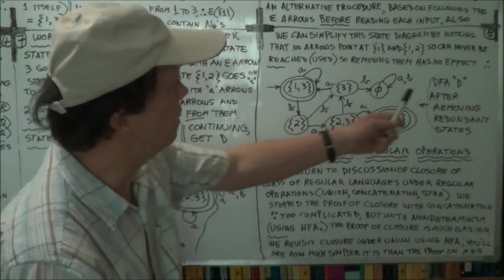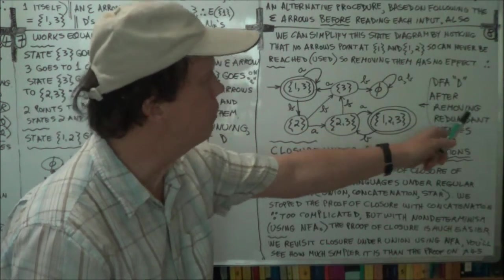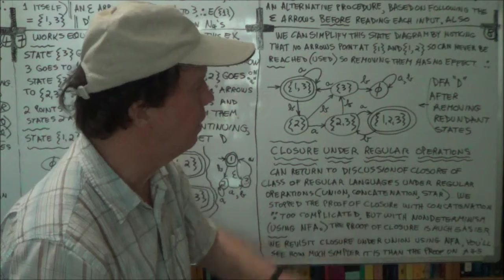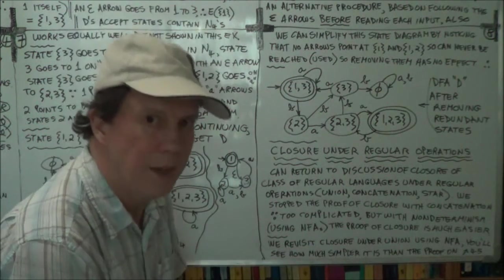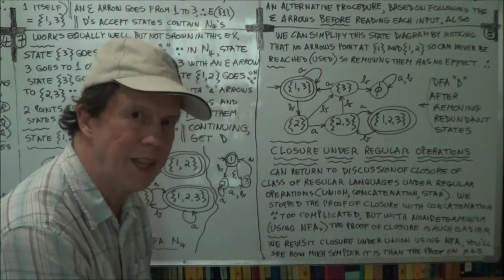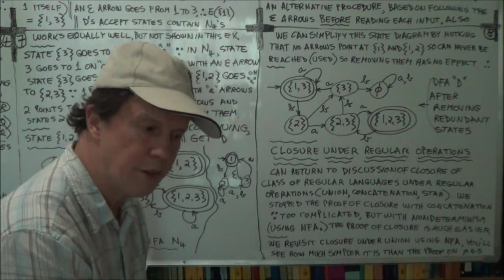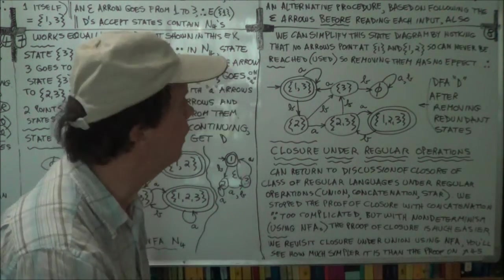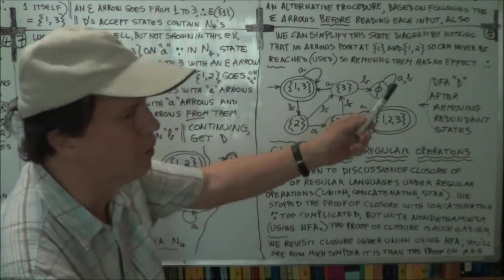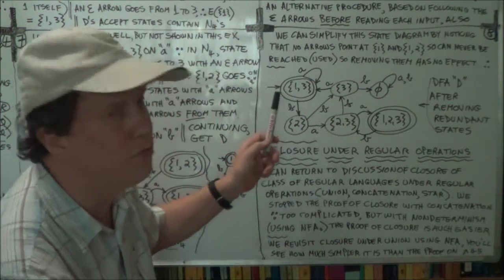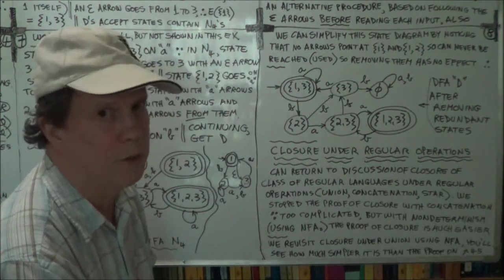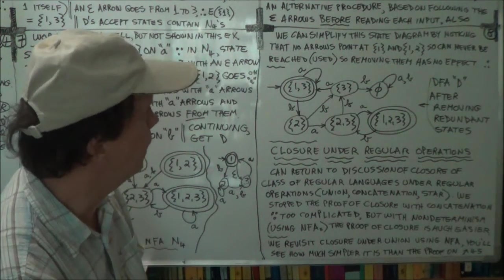So this now is your D of A, your big D, after removing your redundant states. Redundant in the sense you don't need them, they're useless. Because you can't get to them because there's no transition arrow to them. So you get this. So you can sort of filter out the garbage, so to speak, and then you get a relatively simpler DFA equivalent, big D. Okay?